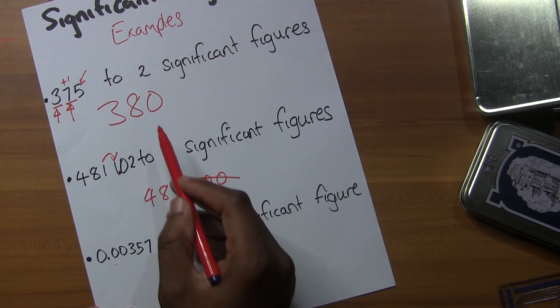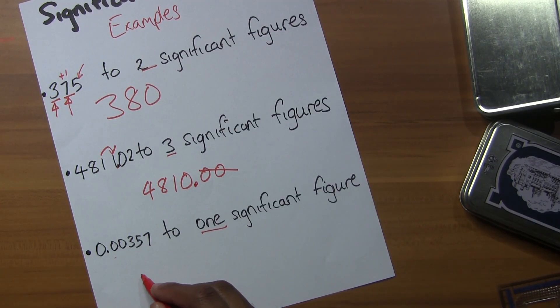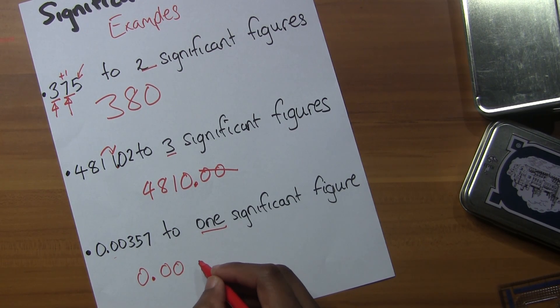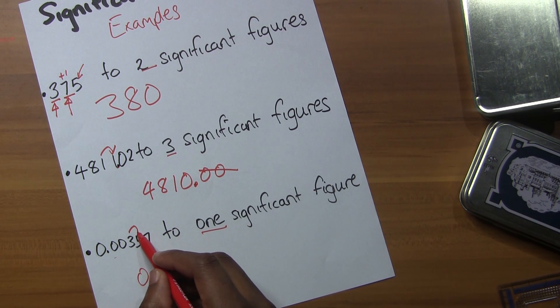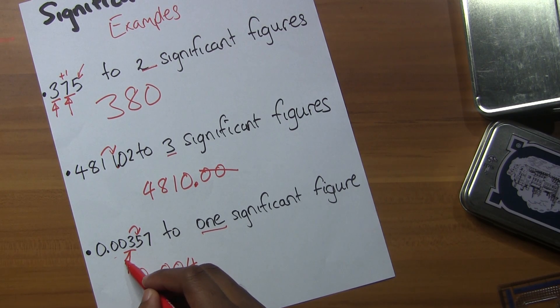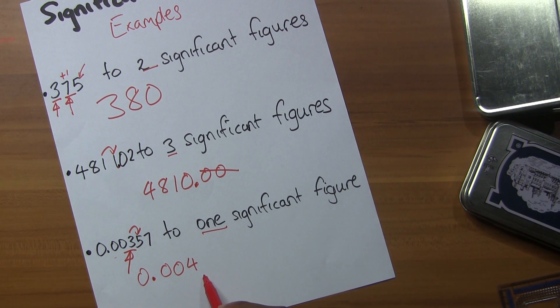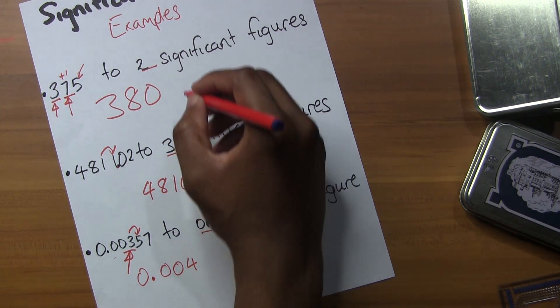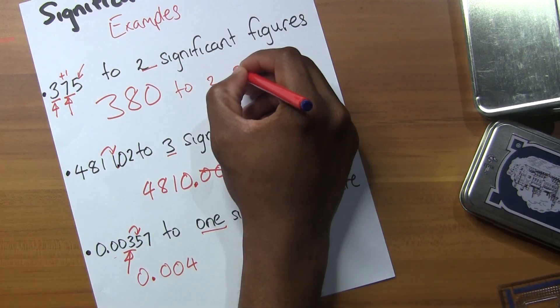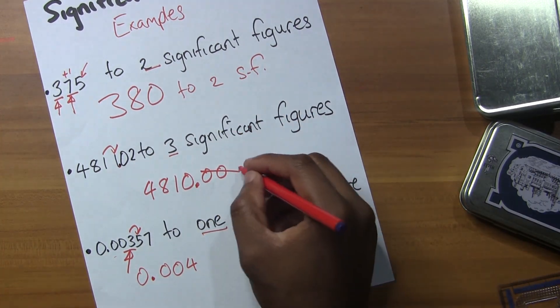Now one significant figure: 0.00357 becomes 0.004. Notice the decimal point doesn't change - it remains the same in significant figures. I put this as 4 because the number that comes after is greater than 5, so we round up. Every time you write the answer, write what you're doing - 'to 2 significant figures' - don't write 'SF' like me.